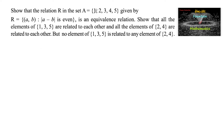Show that the relation R in the set A = {1, 2, 3, 4, 5}, given by R = {(a, b) : |a - b| is even}, is an equivalence relation. Also show that all the elements of {1, 3, 5} are related to each other and all the elements of {2, 4} are related to each other, but no element of {1, 3, 5} is related to any element of {2, 4}.